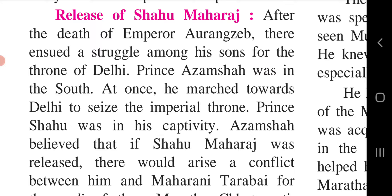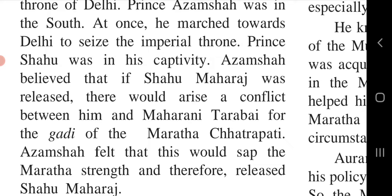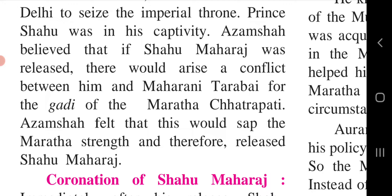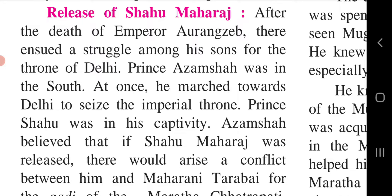After the death of Emperor Aurangzeb, there ensued a struggle amongst his sons for the throne of Delhi. Prince Azam Shah was in the south; he at once marched towards Delhi to seize the imperial throne. Prince Shahu was in his captivity. Azam Shah believed that if Shahu Maharaj was released, there would arise a conflict between him and Maharani Tarabai for the Gaddi of the Maratha Chhatrapati. Azam Shah felt that this would sap the Maratha strength and therefore released Shahu Maharaj.